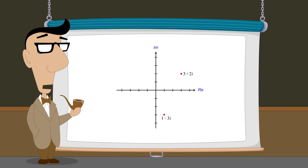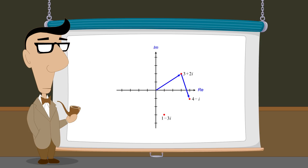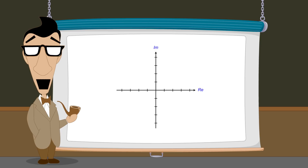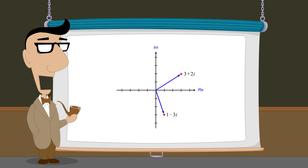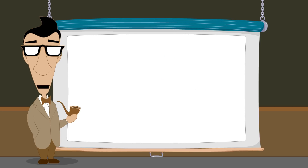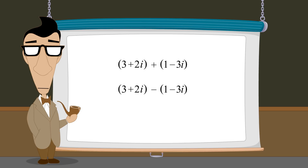So to add two complex numbers using vector addition, we add either vector to the other vector. And to subtract a complex number using vector addition, we add a vector of the same length as the vector we wish to subtract but pointing in the opposite direction. Now that we have seen how to perform complex addition and subtraction, in the next lecture we will demonstrate how complex numbers can be multiplied.